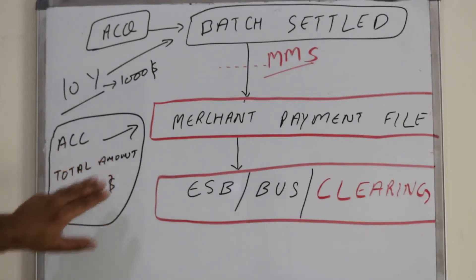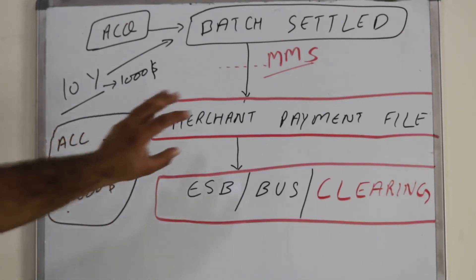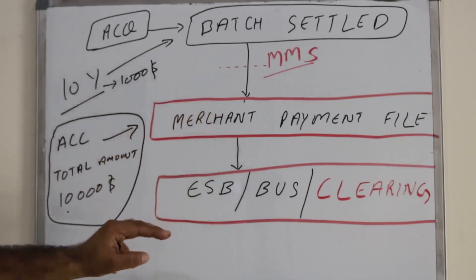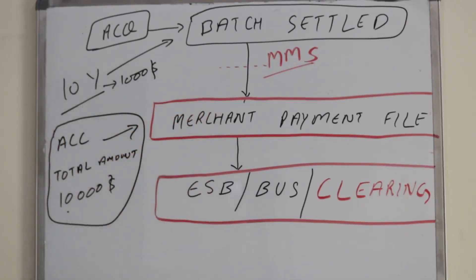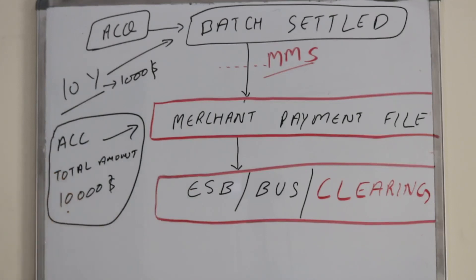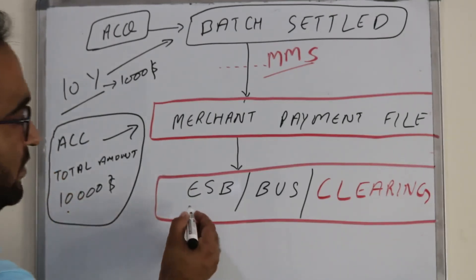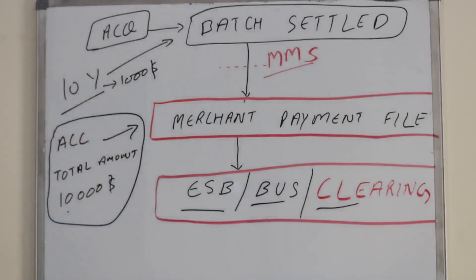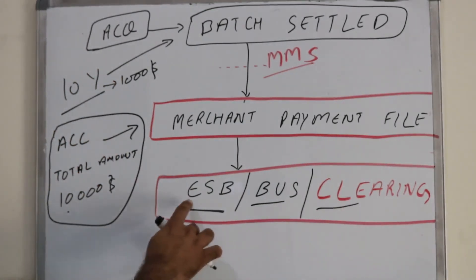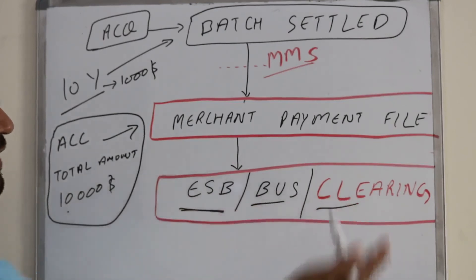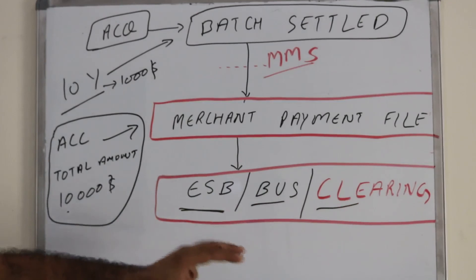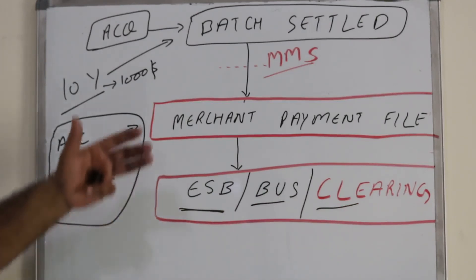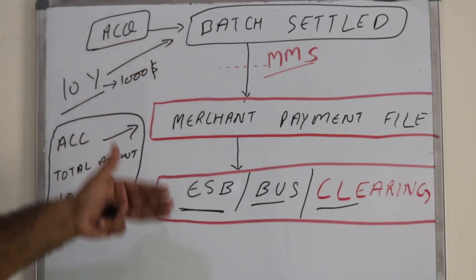Once all the amount and information is captured in this file, the next process is to submit it to another system so the merchant can actually receive the money in their current or saving account. That system is an ESB — enterprise service bus — or a bus system or clearing house system.